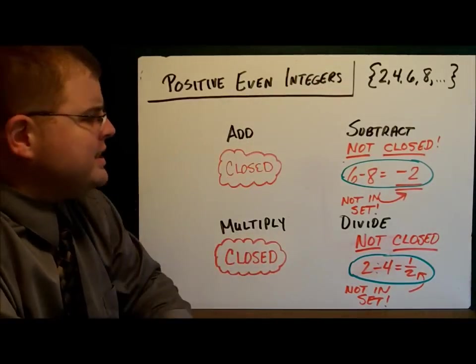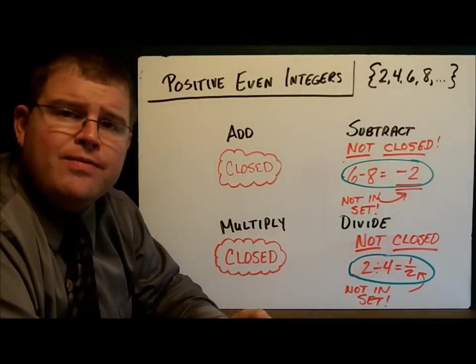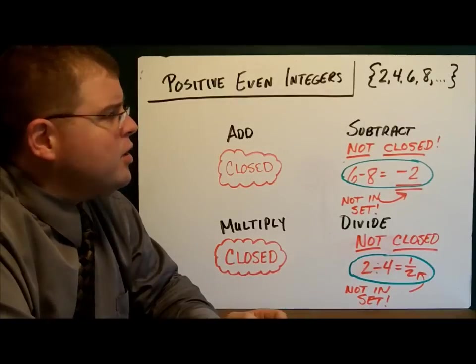Multiplication. They're always in there. Division. Again, not closed. We could do 2 divided by 4. That's 1 half. There's no 1 half in there.